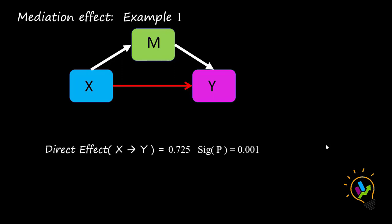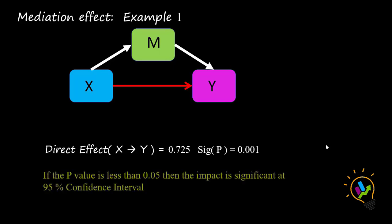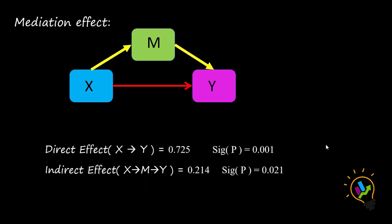When I ran the model with the data, I got the direct effect of X on Y as 0.725 with a p-value of 0.001. When the p-value is less than 0.05, the impact is significant at 95% confidence interval. So the p-value must always be less than 0.05 for the impact to be significant. The direct effect of 0.725 is significant. The second observation is the indirect effect — X on Y through M — which is 0.214, with a p-value of 0.021, which is also less than 0.05, so this is significant.